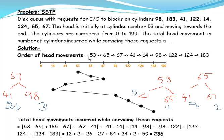So we started at 53 and found the closest request is 65. Now we have to find the closest request for 65. On the left side we have 41, and on the right side we have 67. The difference between 65 and 41 is 24, and between 65 and 67 it is 2. So 67 is the closest to 65, and we include 67 next in the order of head movements.